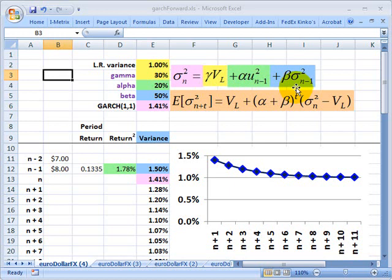And then we have a lagged variance, so in that case, that would be yesterday's variance. And so we've got those three factors: long-run variance, lagged return, lagged variance, and then we need to weight them, and that's the point of the Greek letters.